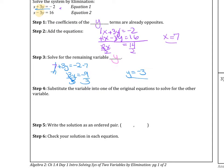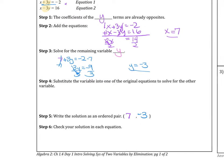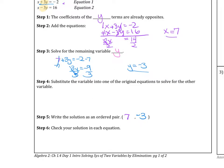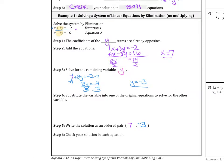So then we write the solution as an ordered pair. x is 7 and y is negative 3. So we're going to go ahead and plug it in to check our solution.